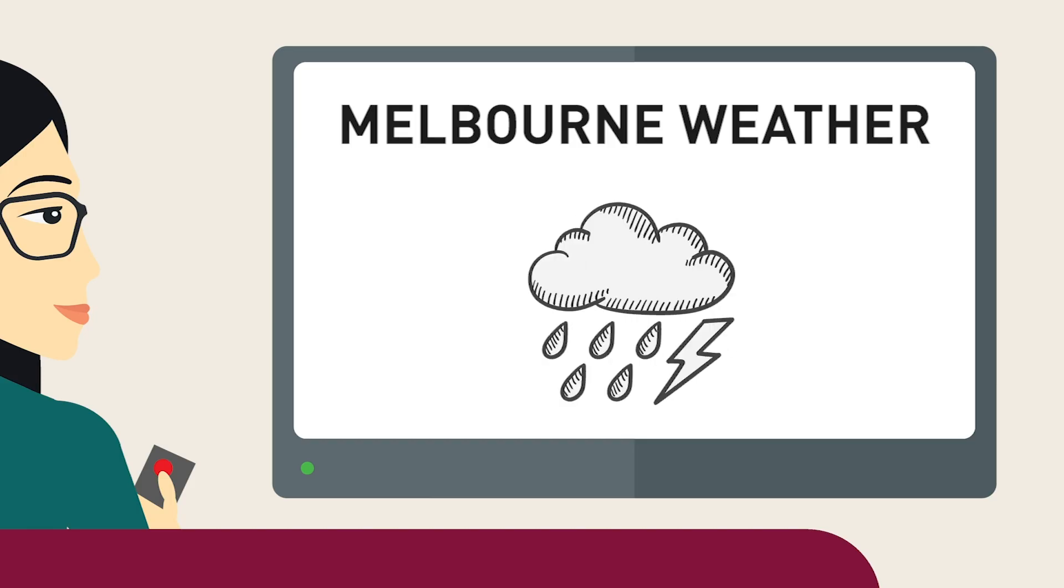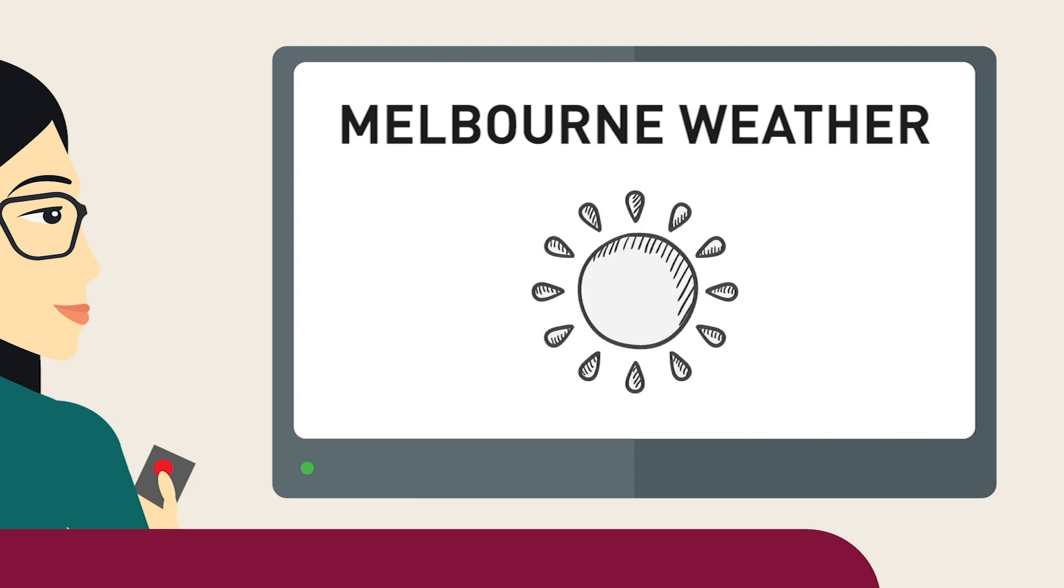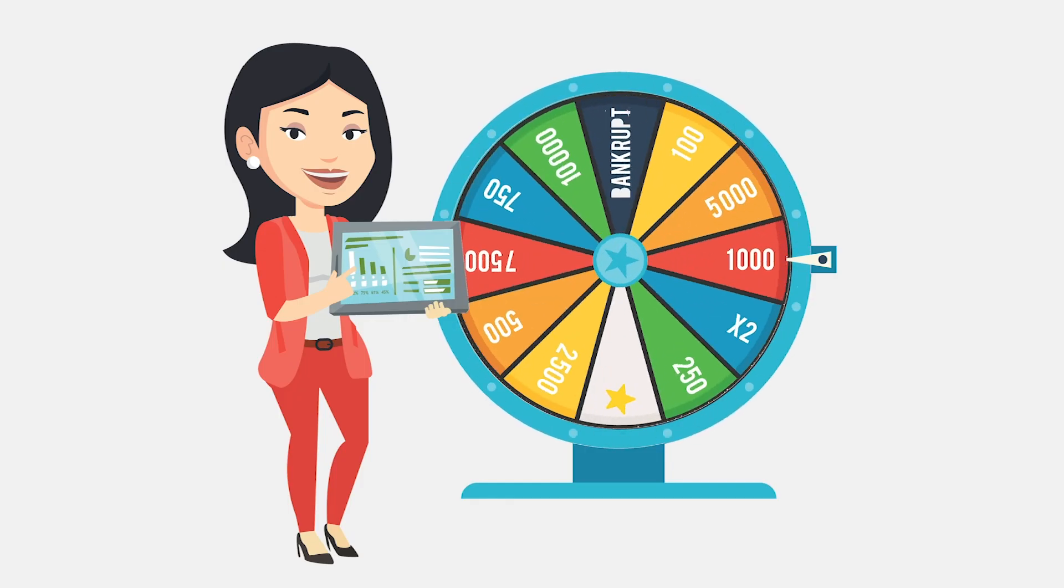For example, did you know that probability theory can be used to predict things like the weather or even your chances of winning the lottery?